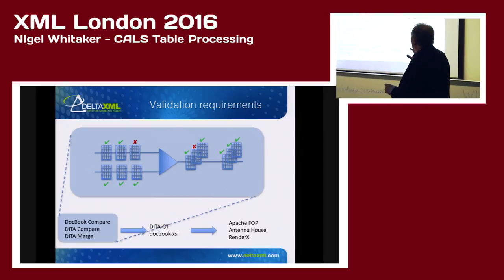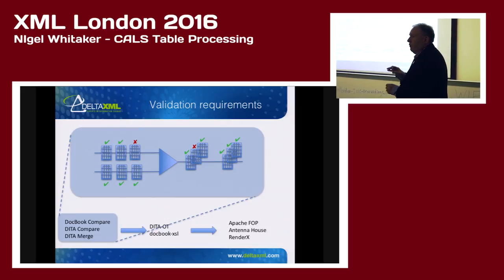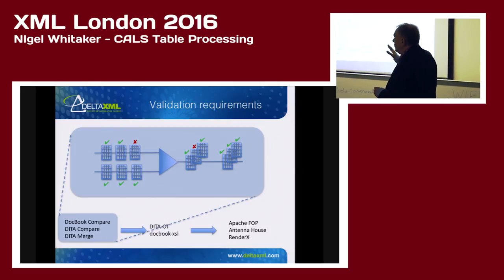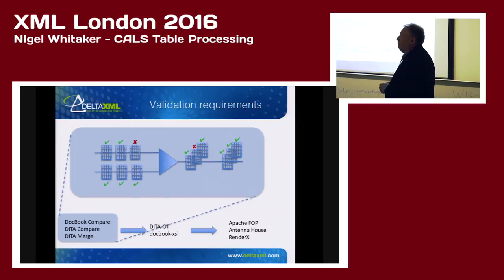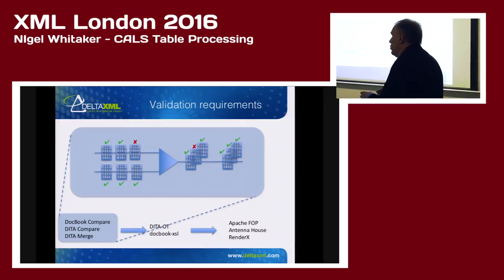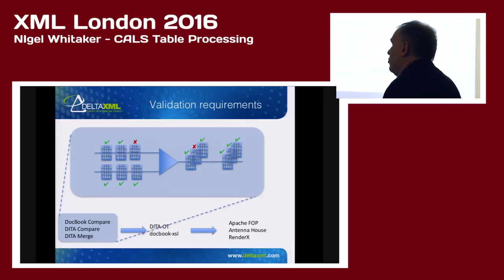I've tried to indicate some of our requirements for the validity checking here. Imagine a comparator with two inputs, and we want to be able to check whether the input files are valid. If I can paraphrase the CALS specs, there's a requirement that says if you read something and it contains errors, you should report them as warnings. So that's one reason we try and do that.